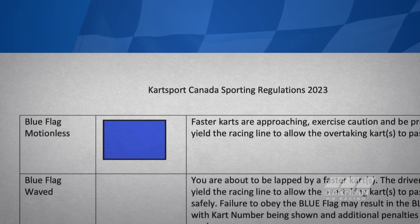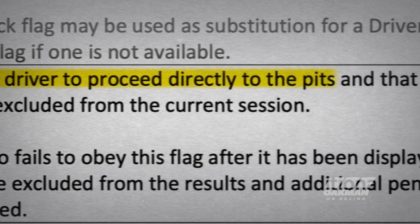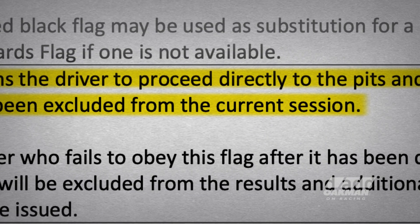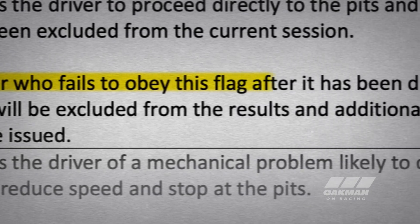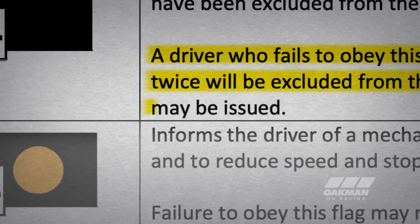Rules can come in written format — in bullet points, in lines — but they can also come in tables. A good example is: what is a black flag? We go down to the table and find black flag with cart number. It says it informs the driver to proceed directly to the pits and that they have been excluded from the current session. There's even a little picture of what a black flag looks like. What's the punishment if you ignore it? It's right underneath it: a driver who fails to obey this flag after it has been displayed twice will be excluded from the results, and additional penalties may be issued.